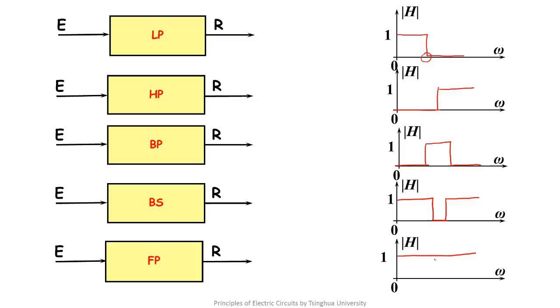The so-called full-pass filter refers that all frequency signals can pass with no attenuation. You might ask, why do we need full-pass filter? Here we only draw the AF characteristic. In fact, there is also PF characteristic of the filter. By adjusting the phase of input and output, the full-pass filter plays the role of adjusting signal.